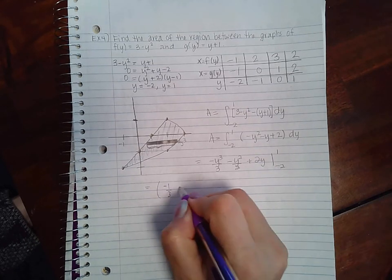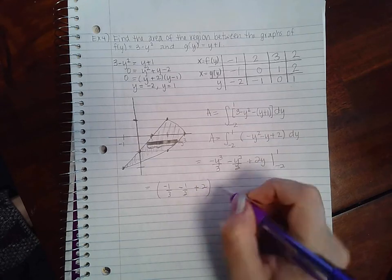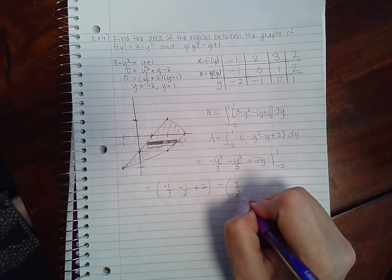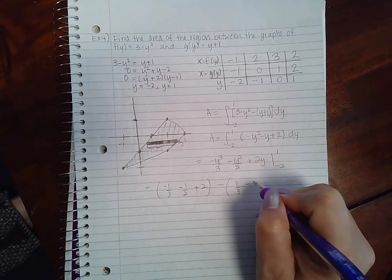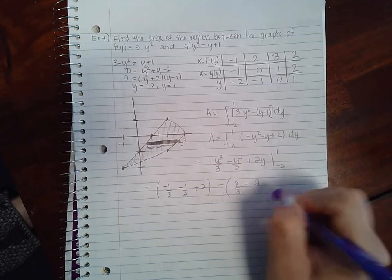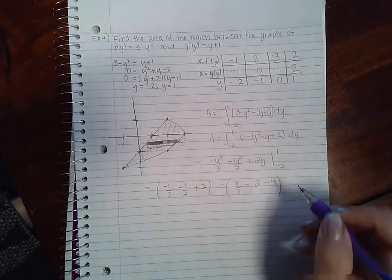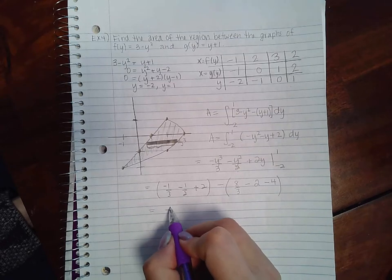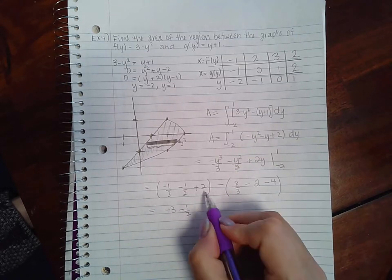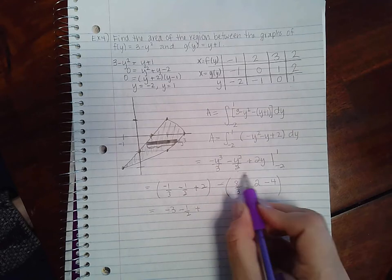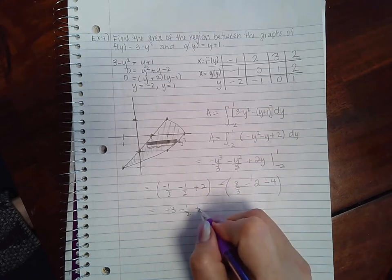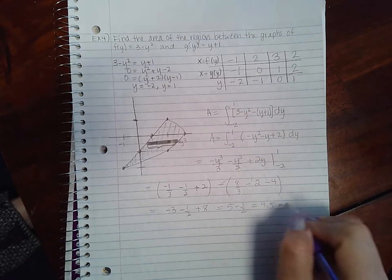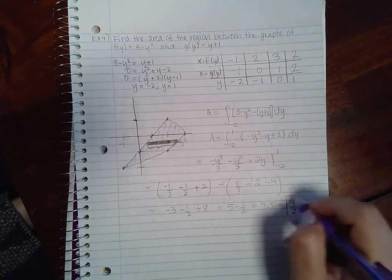We get -1/3 - 1/2 + 2 minus 8/3 - 2 - 4. So here you get -9/3 which is -3, and then here you get 2 + 2 + 4 which is 8. So 5 minus 1/2, which is 4.5 or 9/2, that is going to be our area of this region.